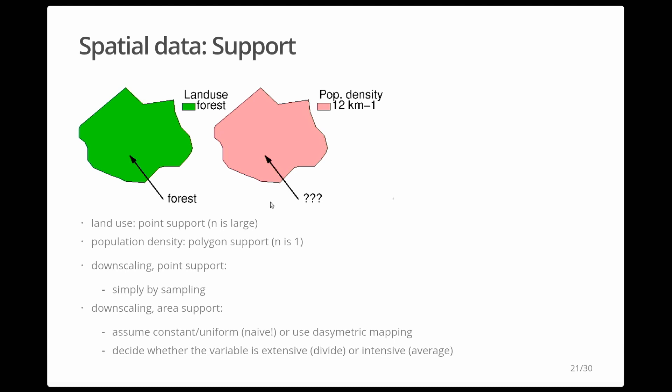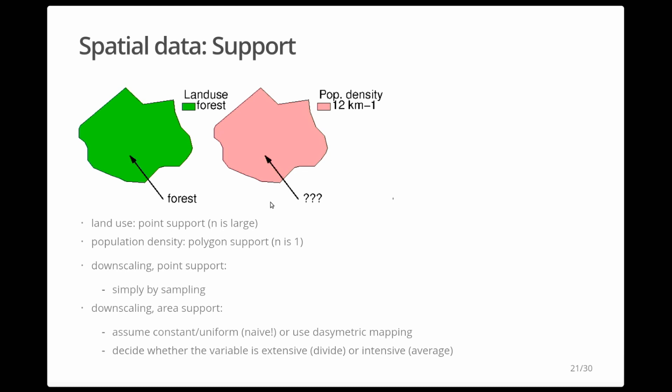There's a lot of raster data. Questions include: should the coordinate of a raster cell be the cell center or a corner, and which corner? Is the raster cell a small polygon with a constant value, as with land cover? Or is it a polygon with an aggregated value, as with satellite imagery where you're essentially doing a convolution over the cell? What is the value of the variable at the cell center?